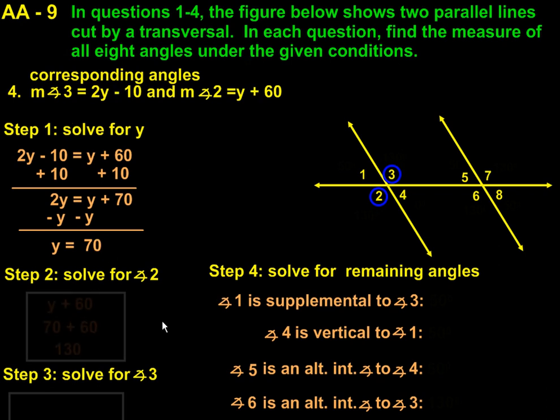So we'll solve for angle number two first. So we have y plus 60, which brings down 70 plus 60, which gets us to 130. So angle two is 130 degrees.